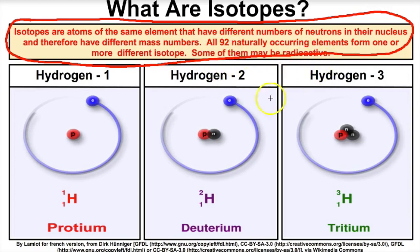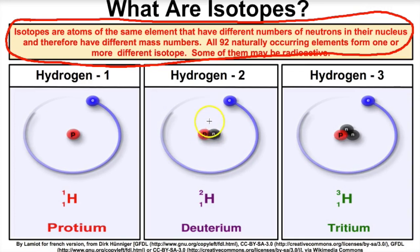What does it mean to be radioactive? That just means that the nucleus of that atom over time is going to lose some of its mass to energy — some of the mass of the nucleus gets converted into different forms of energy like alpha particles, beta particles, and gamma rays. We'll talk about that in a different video.